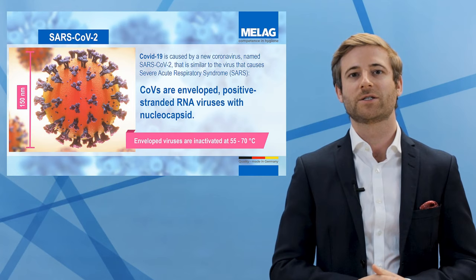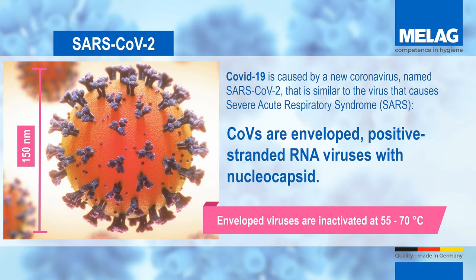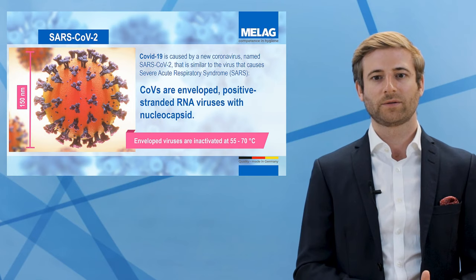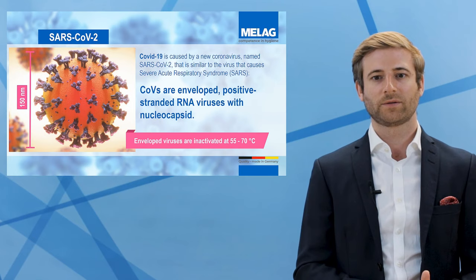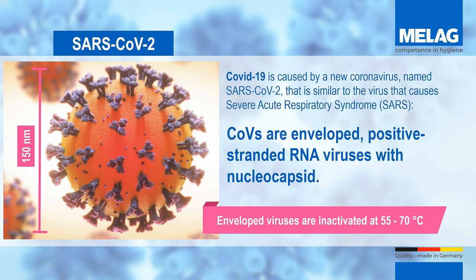The focus today is on the virus called SARS-CoV-2. In the past it was impossible to imagine that a microorganism of only 150 nanometers, which is basically invisible to the human eye, would paralyze the world in such a way. As we all know, the disease COVID-19 is caused by a new coronavirus named SARS-CoV-2. The word corona comes from Latin and means crown or halo. Due to their many extensions, the pathogens of this virus look like a crown or the rays of the sun's corona under the microscope.